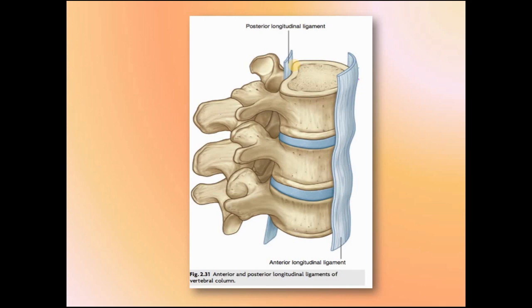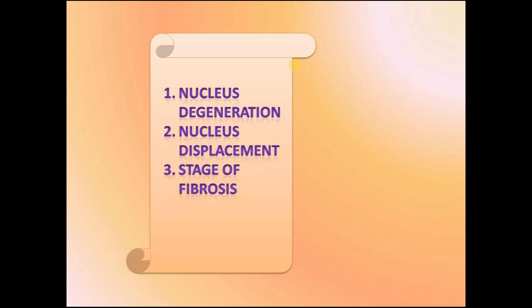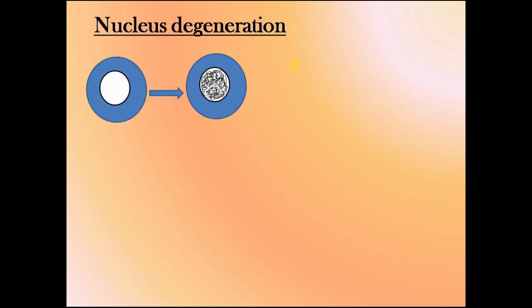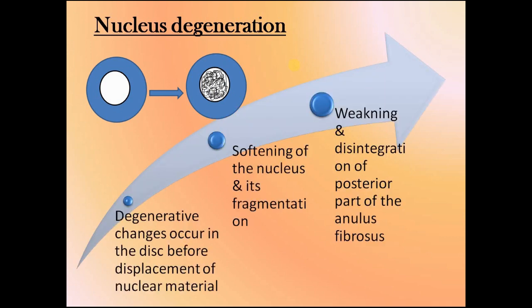So imagine what happens when degeneration of the annulus fibrosus occurs — obviously there are no bodyguards to protect the nucleus, so bulging of the disc occurs. There are a sequence of changes that occur in the disc which leads to its prolapse. These changes are: nucleus degeneration, nucleus displacement, and the stage of fibrosis. In nucleus degeneration, degenerative changes occur before displacement of the nuclear material — mainly softening and fragmentation of the nucleus, and weakening and disintegration of the posterior part of the annulus fibrosus.